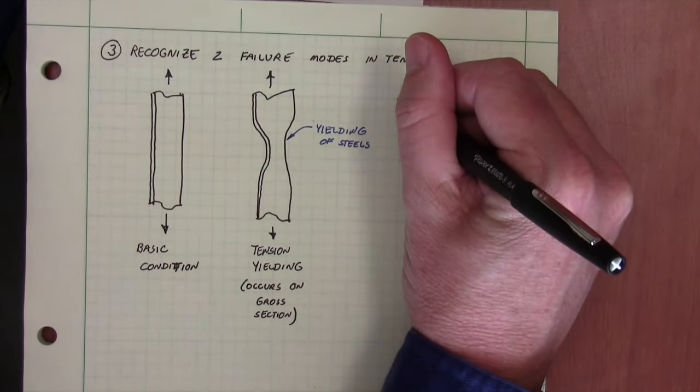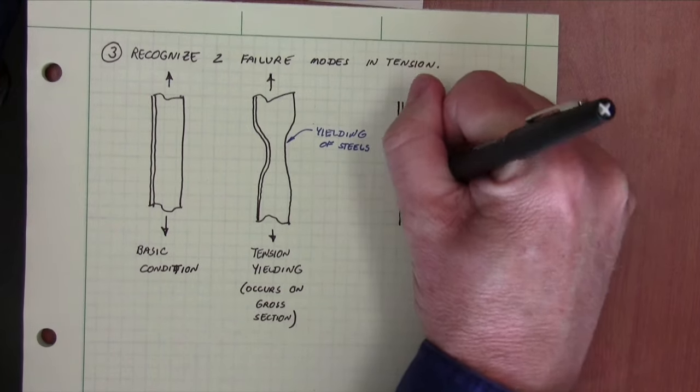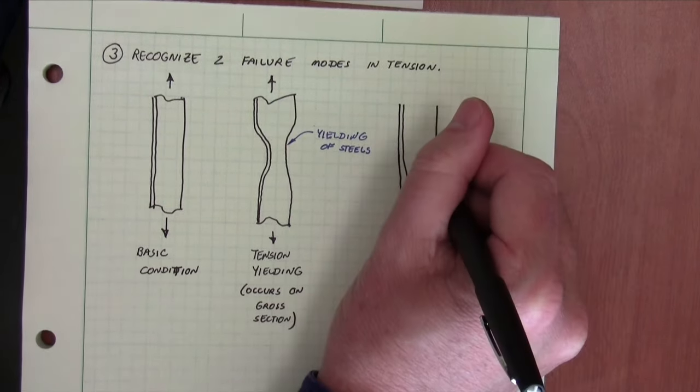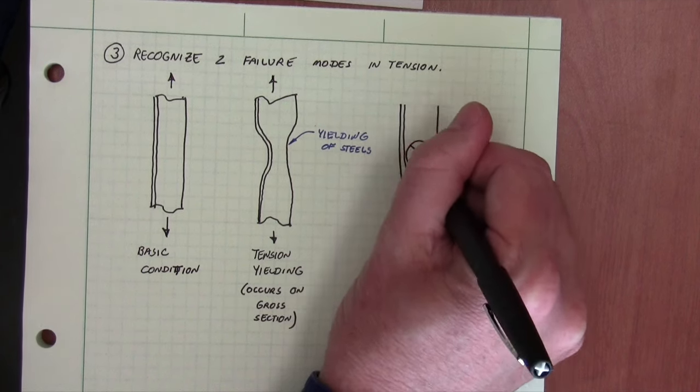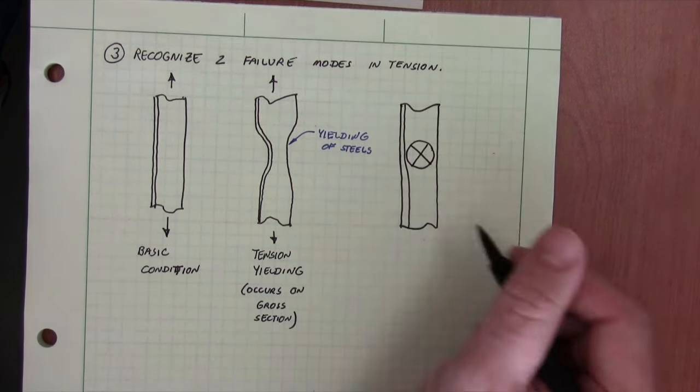The next failure mode is a different type of failure. And to visualize this clearly, think about the extremes. We're going to put a really big hole in this steel member.